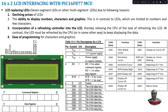First, let us start with the fundamentals of 16x2 LCD. 16x2 represents we have two rows and in each row we can display 16 characters. So that is why the name 16x2 — we have two rows and in each row it can be used for displaying 16 characters.